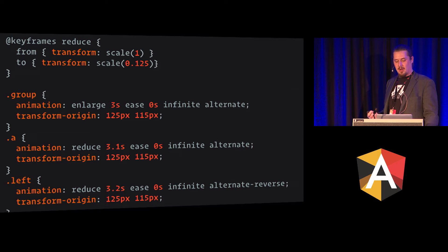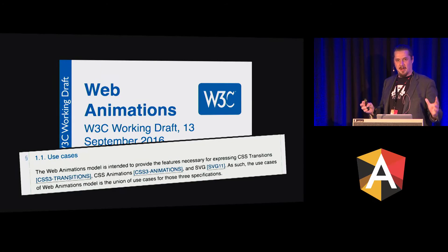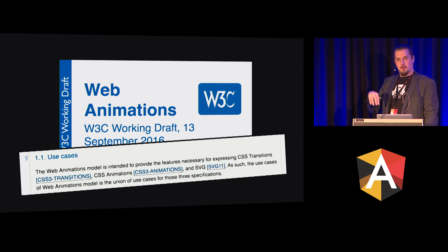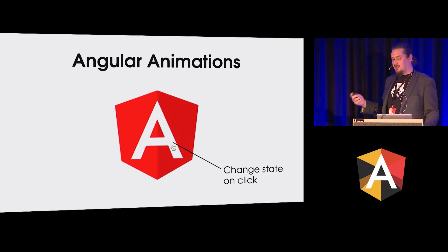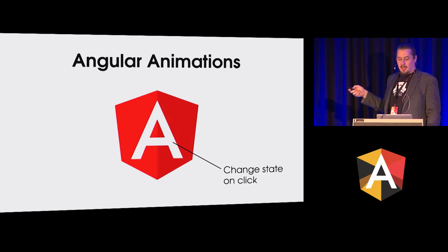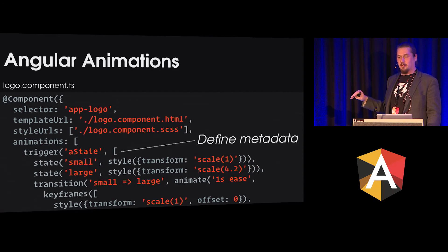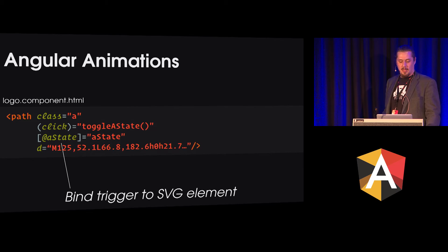Beyond CSS and SMIL, there's also the emerging Web Animations standard, which is really interesting for SVG because one of its expressed goals is to unify CSS and SVG animations — it's meant to be a replacement for SMIL. What makes it doubly interesting for us is that it happens to be the underlying engine behind Angular's animations, which means we can use ngAnimate with SVG. We can do enter and exit animations and transitions tied into actual component data. We use animation triggers in component metadata and attach them to elements using the ngAnimate binding syntax, and that generally just works.